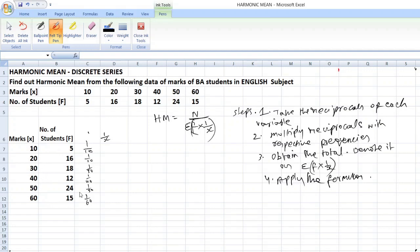1 is divided with 10, 20, 30, 40, 50, 60 like that. Okay. First, you have to find out the reciprocals. Reciprocals. Okay students.